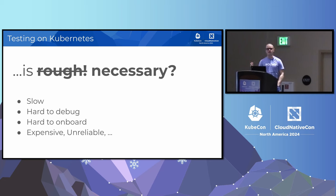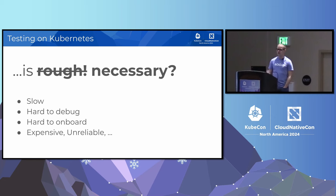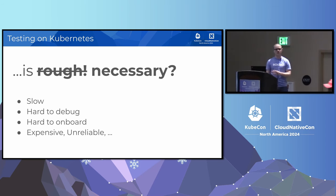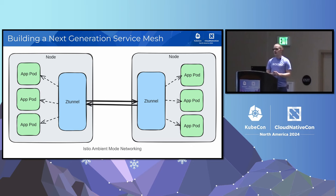I want to give some background on what I do to set the stage. I work on Istio, which is a service mesh. If you don't know what that is and are interested, there were plenty of talks this week you can catch the replays of. You don't need to know the details, though. What you do need to know is that we've been working on a next-generation service mesh deployment model, which gave us a unique opportunity to rethink our testing strategy from the ground up as we built this new architecture.